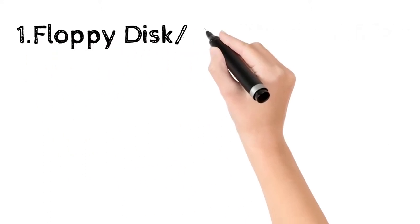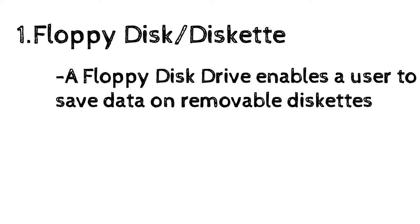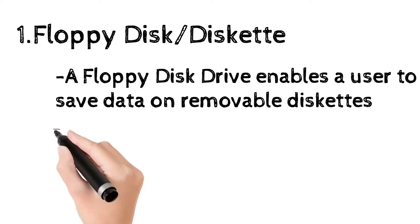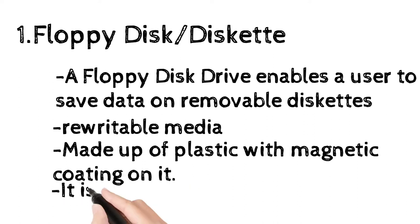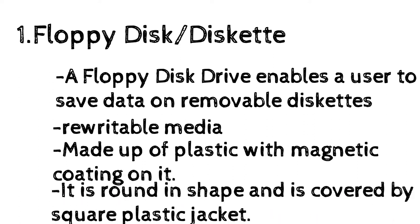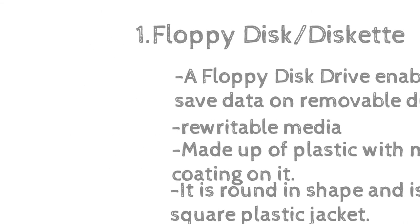A floppy disk drive is a computer disk drive that enables a user to save data on removable disk kits. This portable storage device is a rewritable media and can be reused a number of times. It is made up of plastic with a magnetic coating on it, round in shape, and covered by a square plastic jacket. Floppy disks are commonly used to move files between different computers, and each floppy disk can store approximately one million characters. A floppy disk is inserted into a slot of the FDD, that is, floppy disk drive.